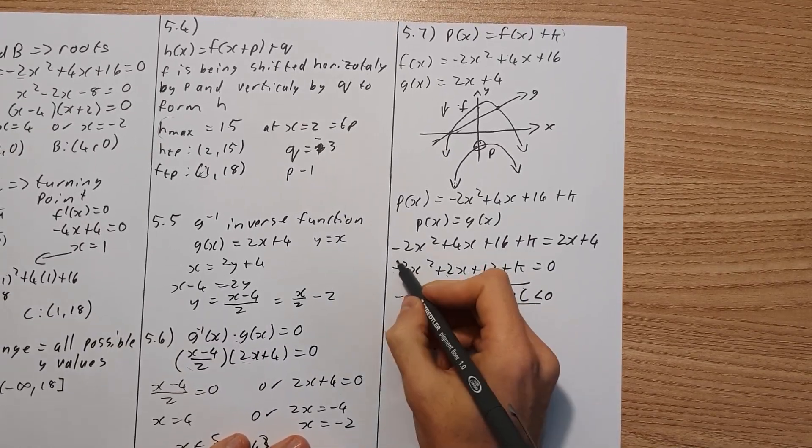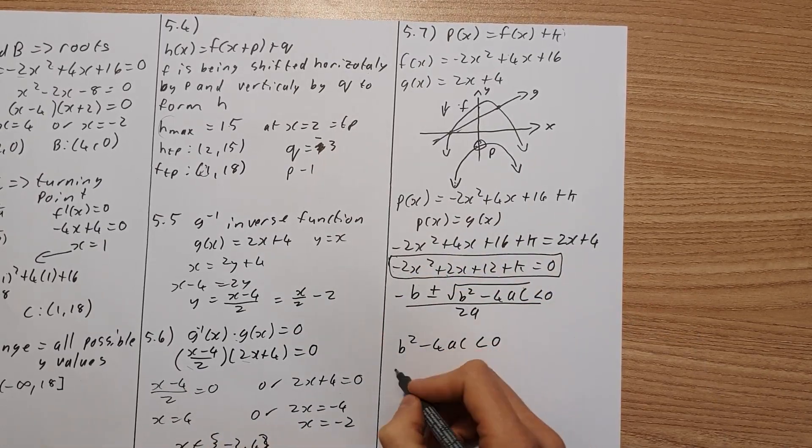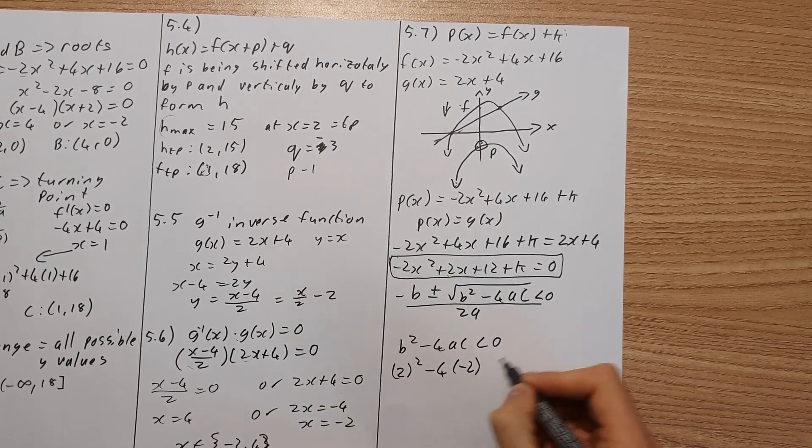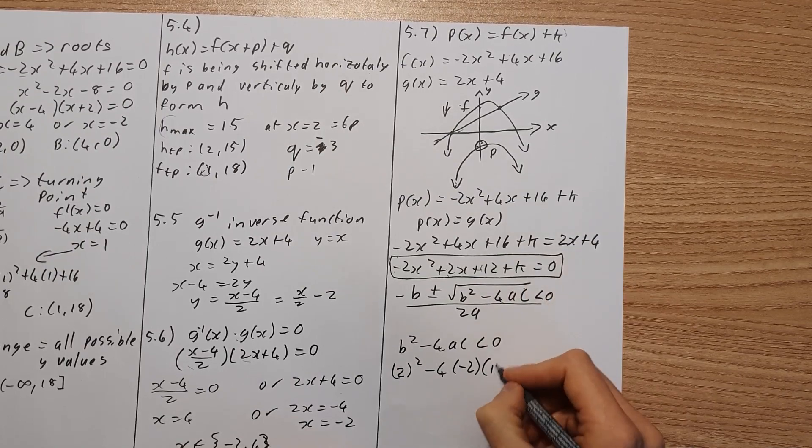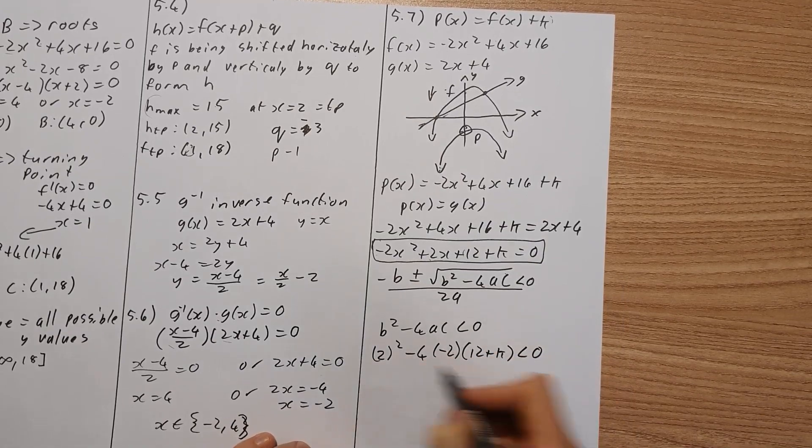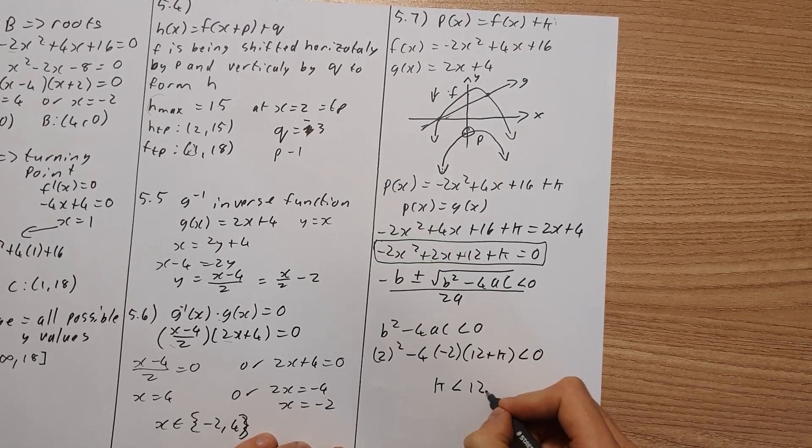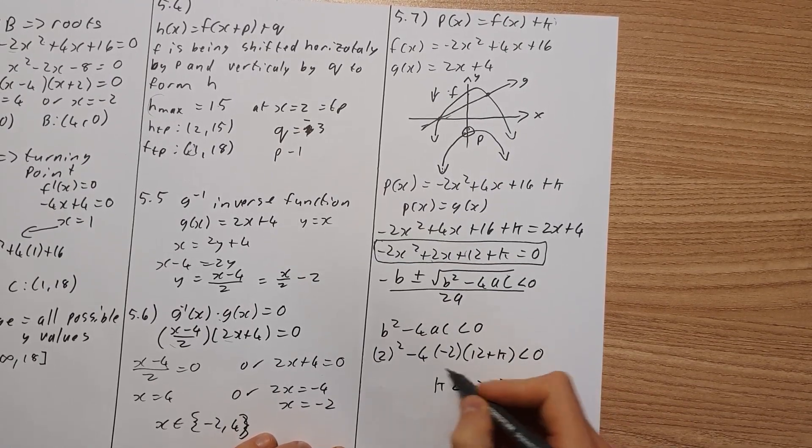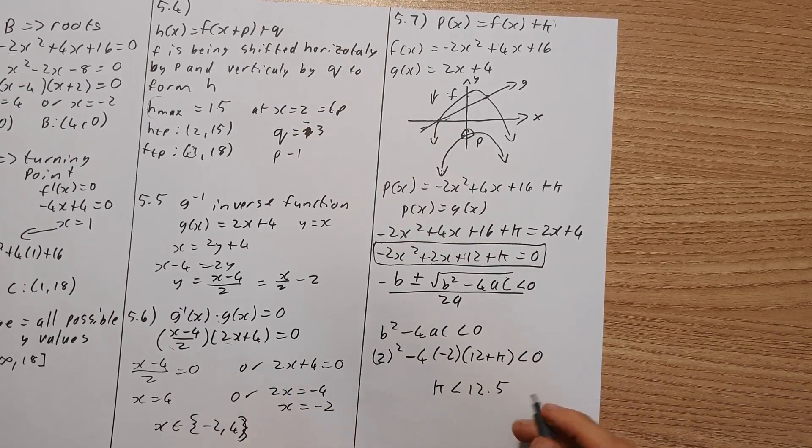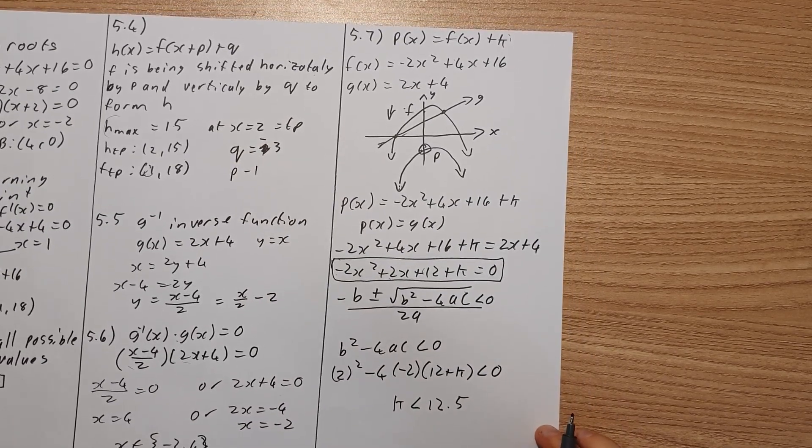Now, if I substitute in the values from this equation, which I have over here, which is the intercepts, I'm going to get that. I'm going to have 2 squared minus 4, negative 2, and then c is this 12 plus k. So 12 plus k. That must be less than 0. So if you solve this over here, you should get a k value, which must be less than 12.5. So therefore, k must either equal to, or must be less than 12.5 in order for p not to intercept g. And that's how we go about doing this equation, or question.